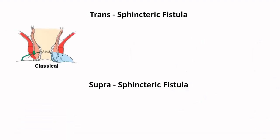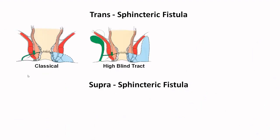Going into trans-sphincteric and supra-sphincteric: if it traverses both the sphincters, it is a trans-sphincteric fistula. It will go into the ischio-rectal or ischio-anal space and then drain externally. A high blind tract can be possible even in this variant. Trans-sphincteric accounts for around 25% of cases and is usually a result of an ischio-anal abscess.